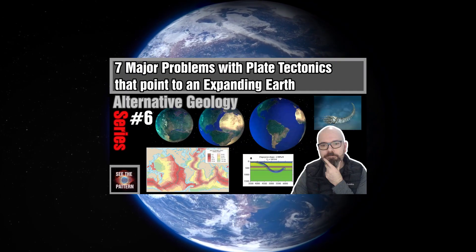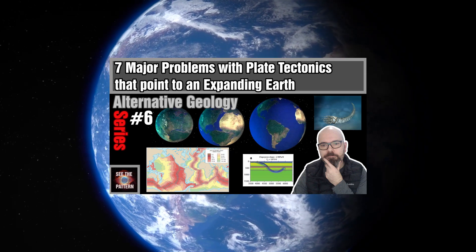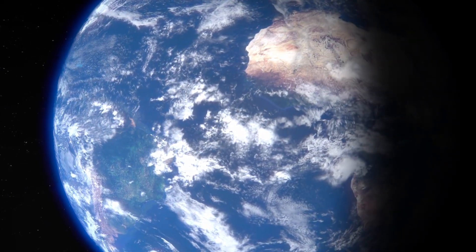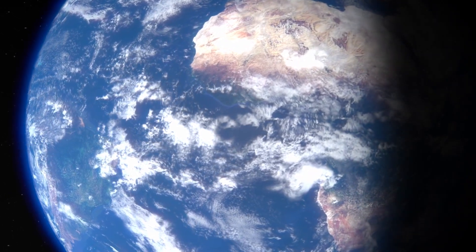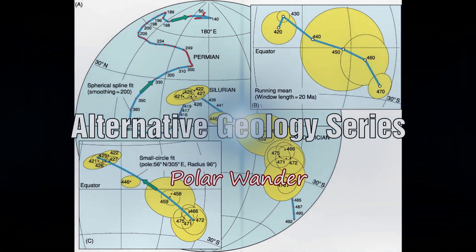In the previous episode we explored some solid reasons to consider the expanding Earth model. In this episode we will see if an expanding Earth can give an alternative explanation for the fluctuations in early Earth's climate and whether it can explain why our rotational pole has and is wandering.